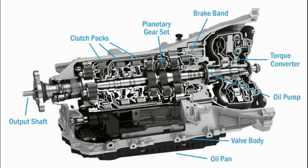3. Lay shaft or counter shaft: It is the shaft through which the output of the engine is transferred to the main shaft by the continuous meshing of gears on the lay shaft to the gear on the clutch shaft. 4. Gears: They are connecting circles with teeth that rotate and mesh with another gear on a different shaft in order to transmit circular motion between two different shafts. They can be spur gear, helical gear, bevel gear, and worm gear.